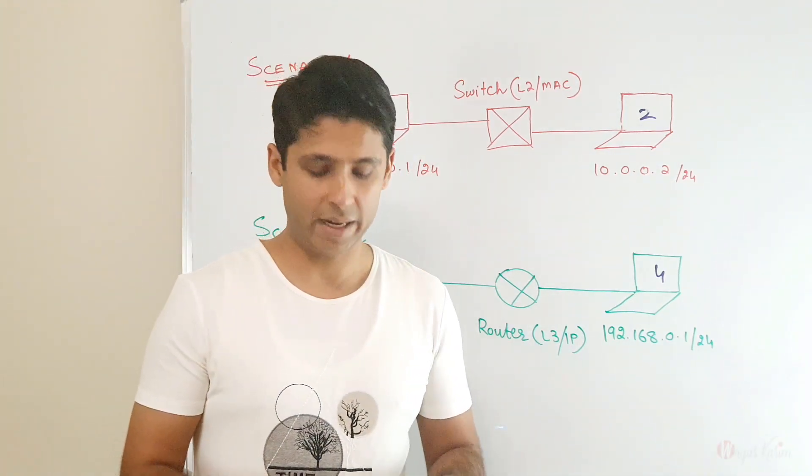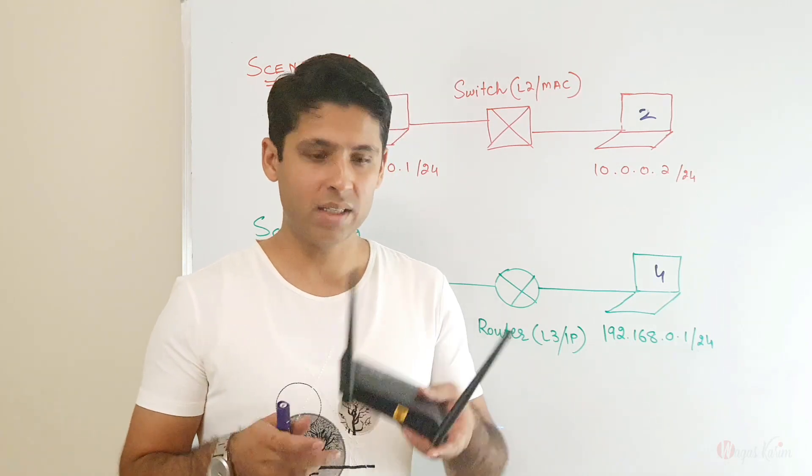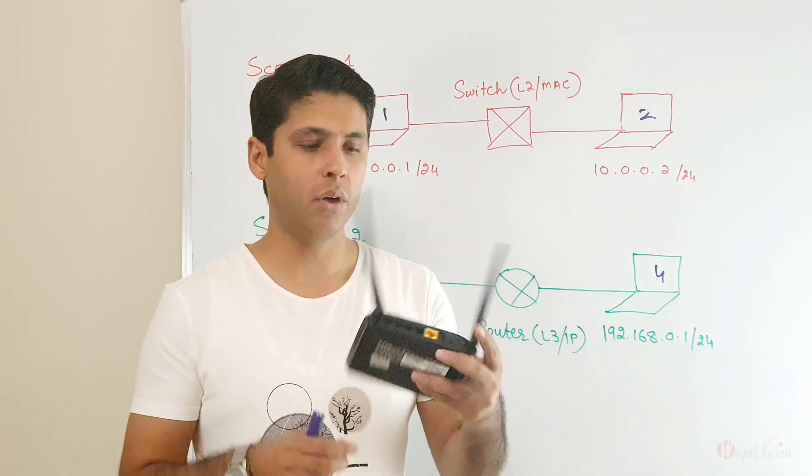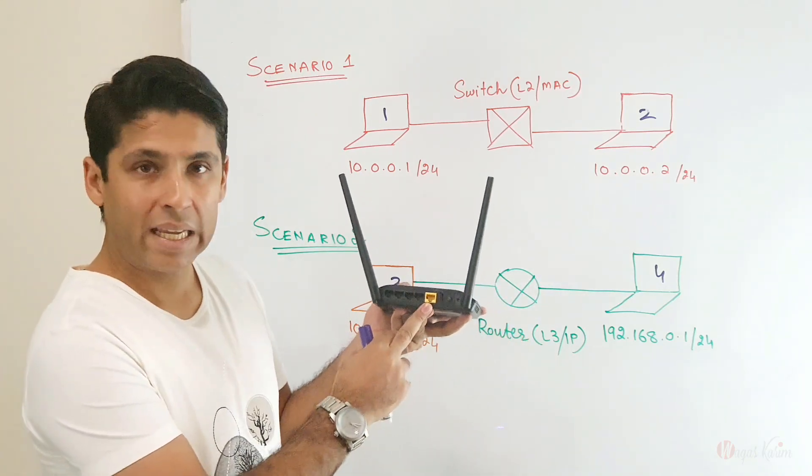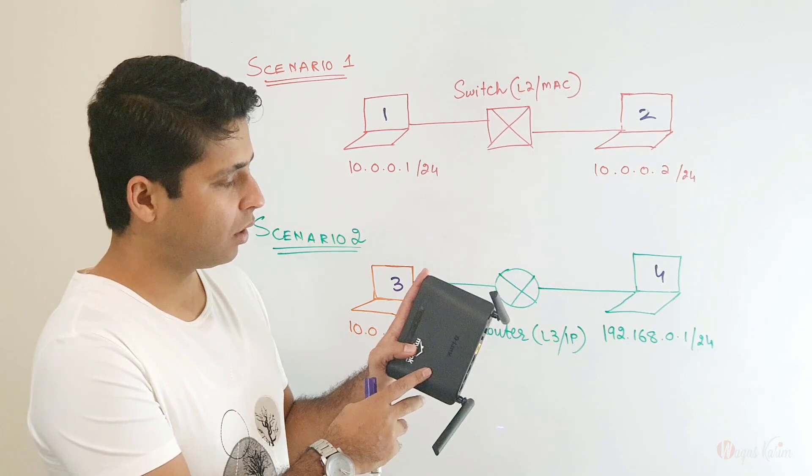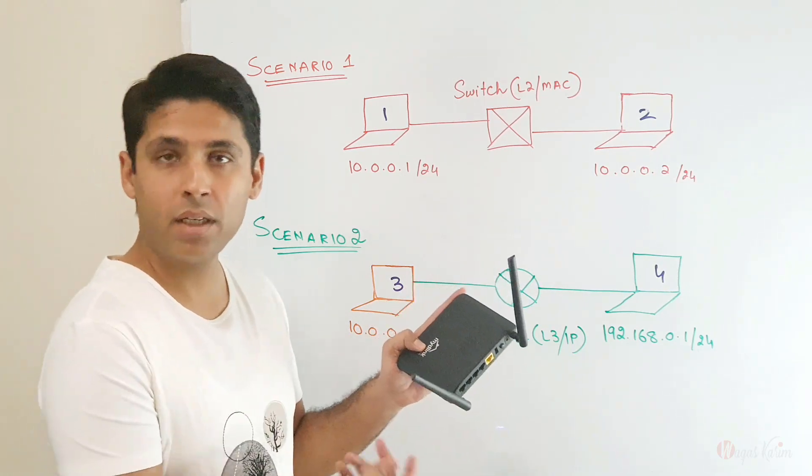Today I brought this home Wi-Fi router. I can show you how does this home Wi-Fi router work. If you can see clearly, there are five ports. The first port is called the WAN.